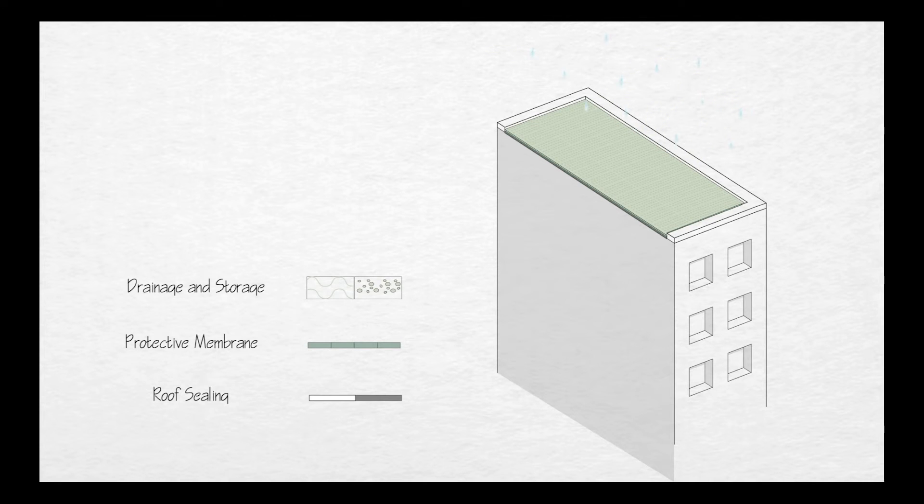The drainage and storage layer allows the excess of water to be stored, maintaining its minerals and recycling them. A filter layer is then added to separate the surplus water from the vegetation layer.